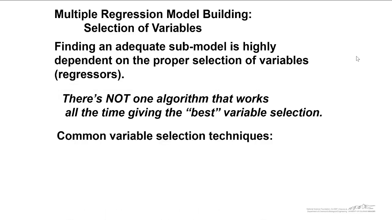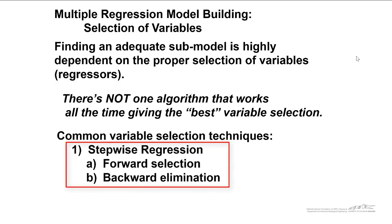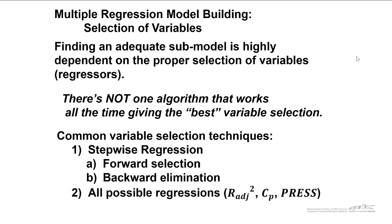I'm going to talk about common variable selection techniques. The most common are stepwise regression. We have forward selection and backward elimination, and in this screencast, I'll show you an example of backward elimination, and then there's also an all-possible regressions technique. This is also known as best subsets, and we use some statistics, adjusted R squared, and these two new ones, CP and PRESS, in order to compare the different candidate regressor models.